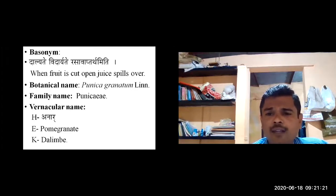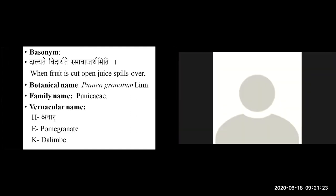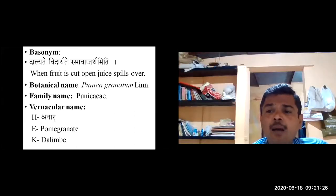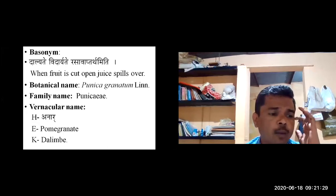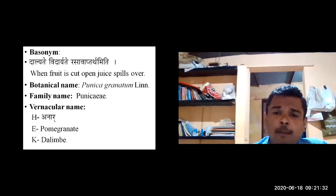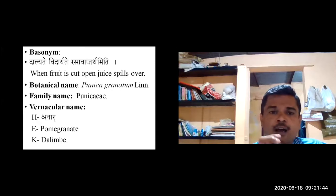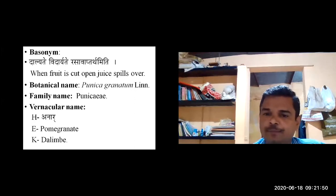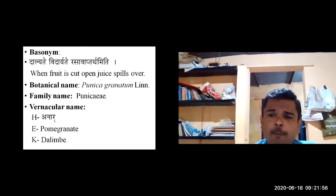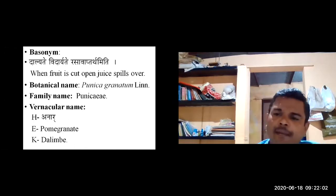The botanical name of this drug is Punica granatum. 'Punica' pertains specifically to the pericarp — it is a cartilaginous apple, referring to the outer layer of the fruit. 'Granatum' means the fruit is filled with seeds. So Punica granatum — the fruit whose outer layer is leathery and which is filled with seeds.